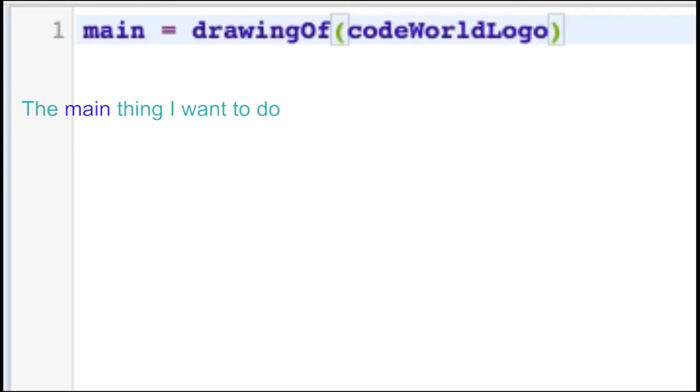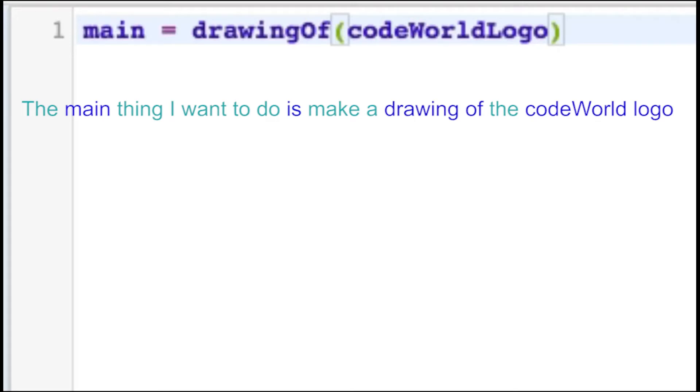If you write 2 plus 2 equals 4, it's the same thing as saying 2 plus 2 is 4. If you read the whole program as an English sentence, it would say, the main thing I want is a drawing of the code world logo. Drawing of with parentheses indicates that your program will be a drawing of something. Drawing of is a function. A function turns something into something else. In this case, drawing of is a function that will turn your program into a drawing.